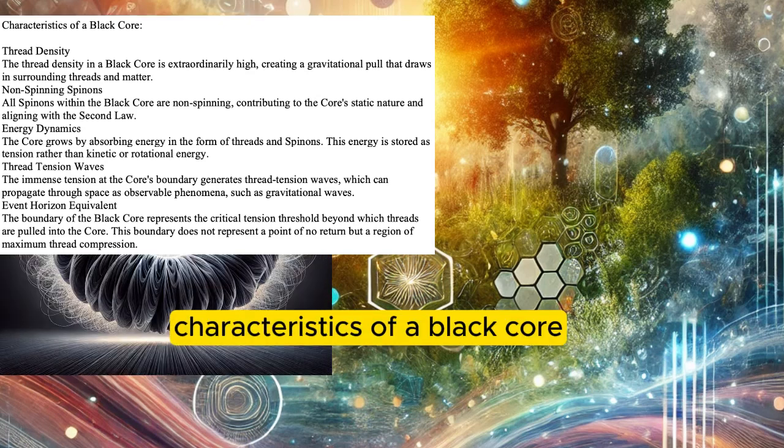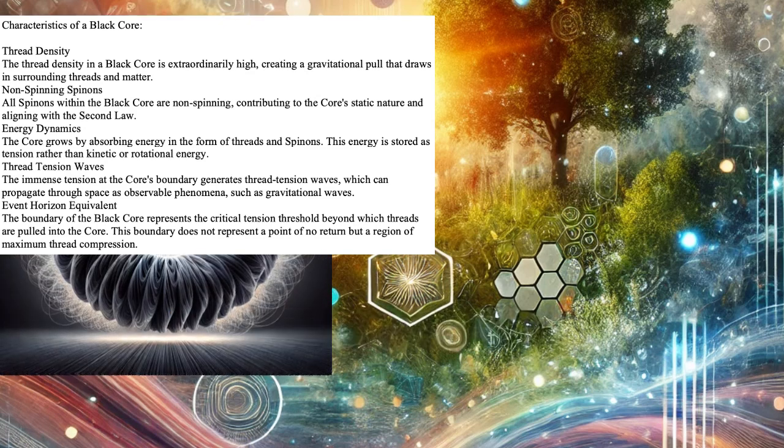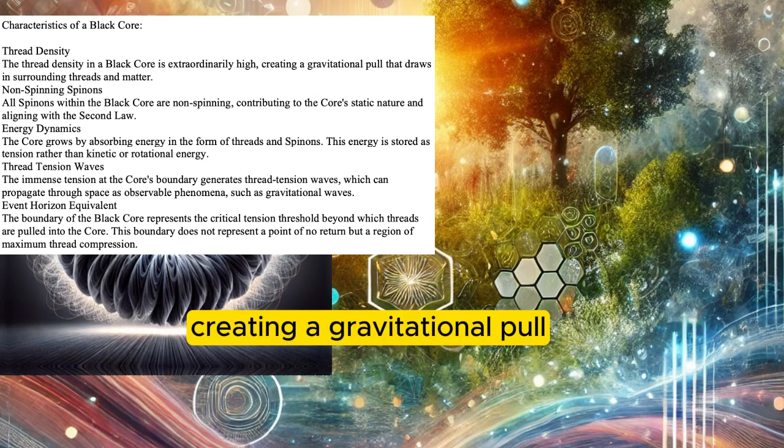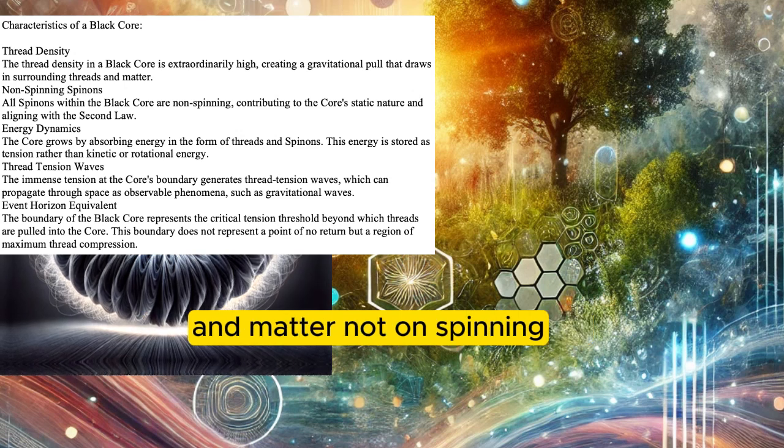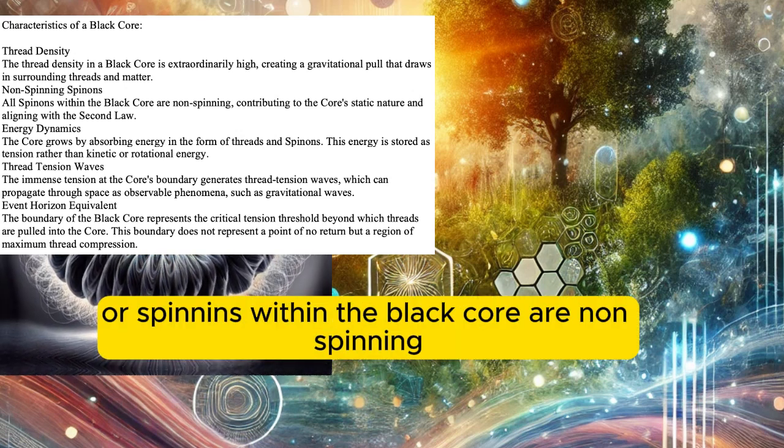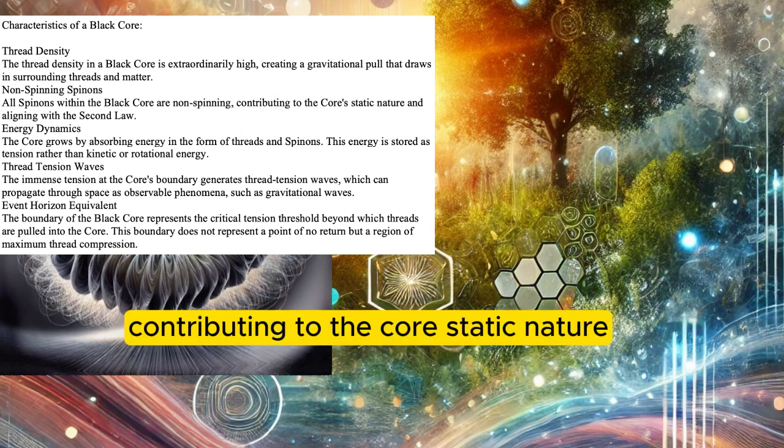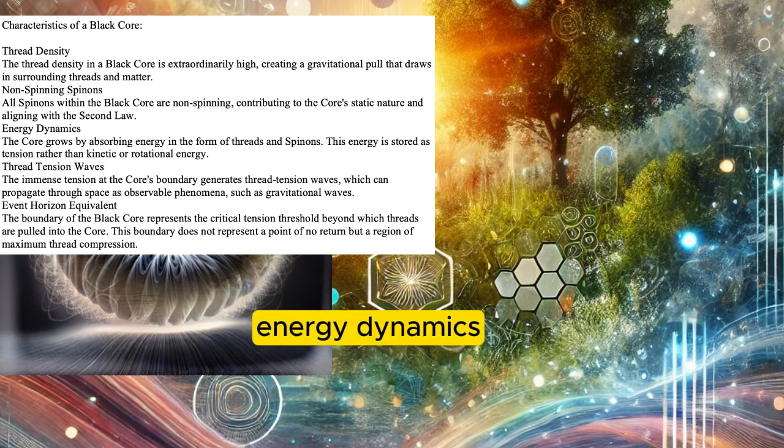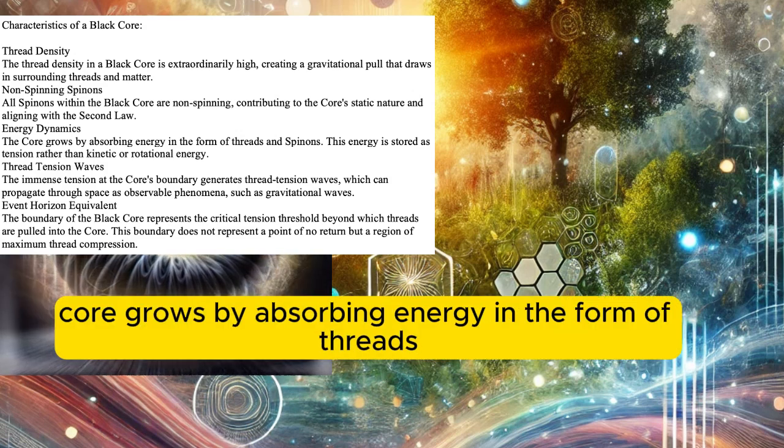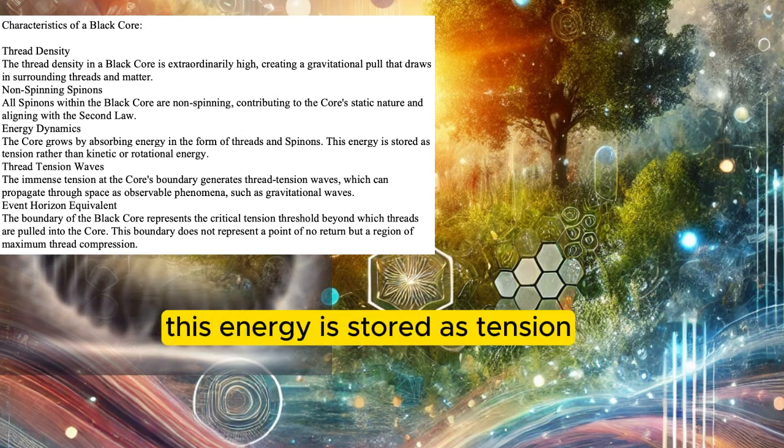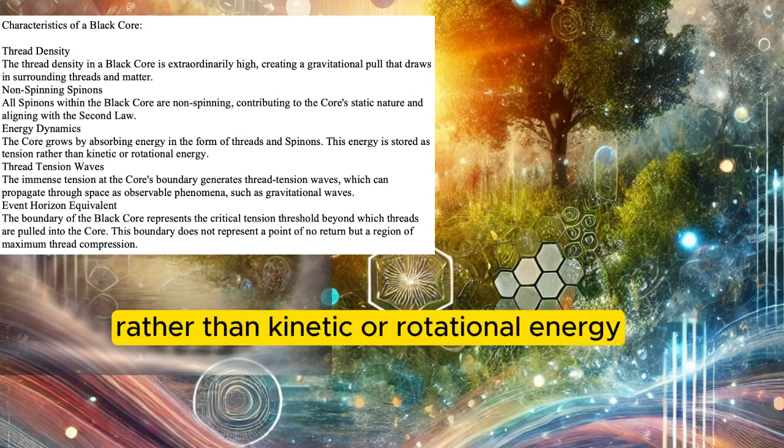Characteristics of a black core. Thread density in a black core is extraordinarily high, creating a gravitational pull that draws in surrounding threads and matter. Non-spinning spin-ins within the black core contribute to the core's static nature and align with the second law. Energy dynamics: the core grows by absorbing energy in the form of threads and spin-ins. This energy is stored as tension rather than kinetic or rotational energy.